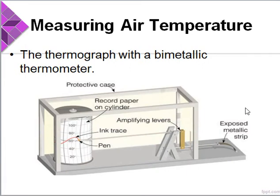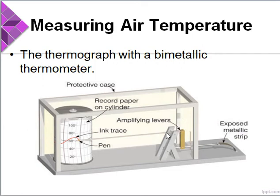The thermograph uses a bimetallic thermometer, which consists of two different metals — usually brass and iron — welded together to form a single strip. As the temperature changes, the brass expands more than the iron, causing the strip to bend. This small amount of bending is amplified through a system of levers to a pointer on a calibrated scale. The bimetallic thermometer is usually the temperature-sensing part of the thermograph — an instrument that measures and records the temperature.